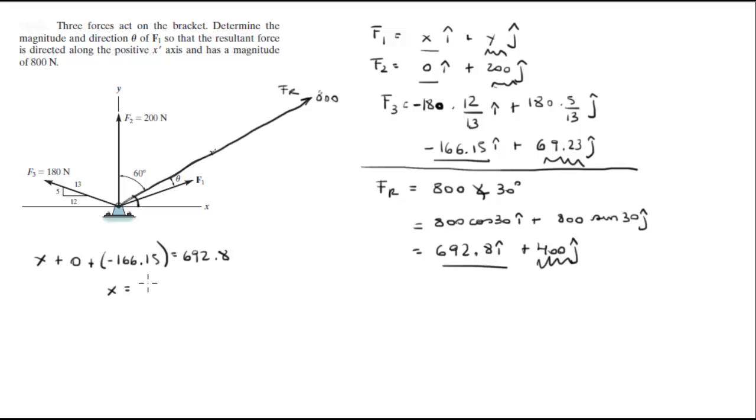Now then let's do the y. Y plus 200 plus 69.23 is equal to 400, so y is equal to 130.77.